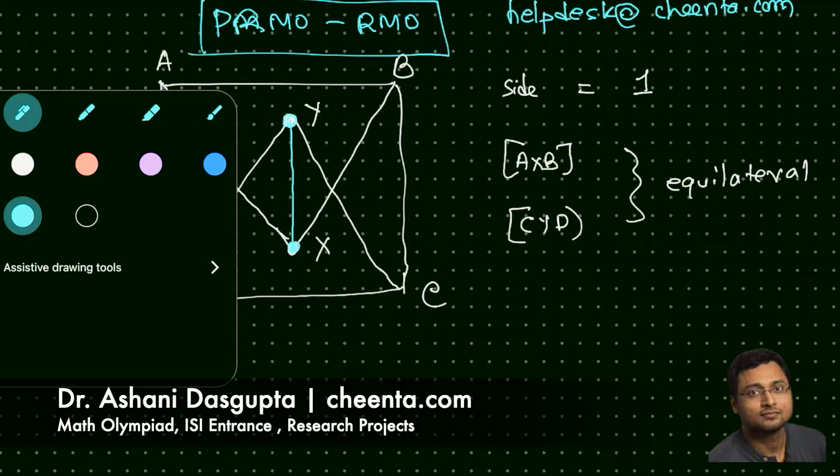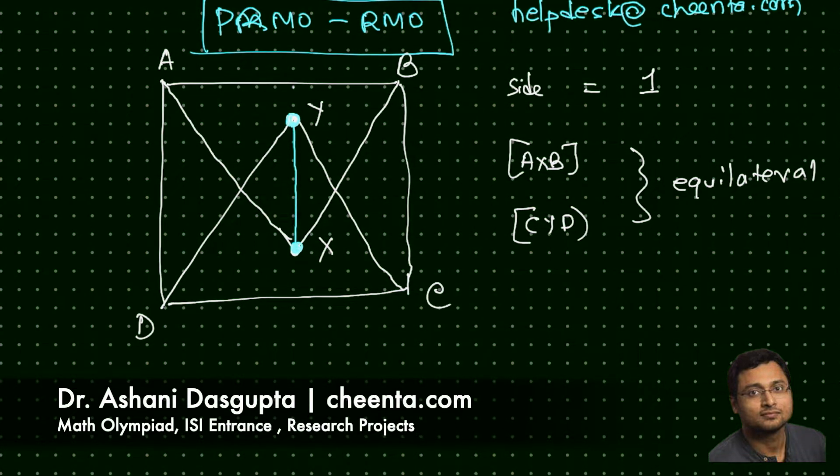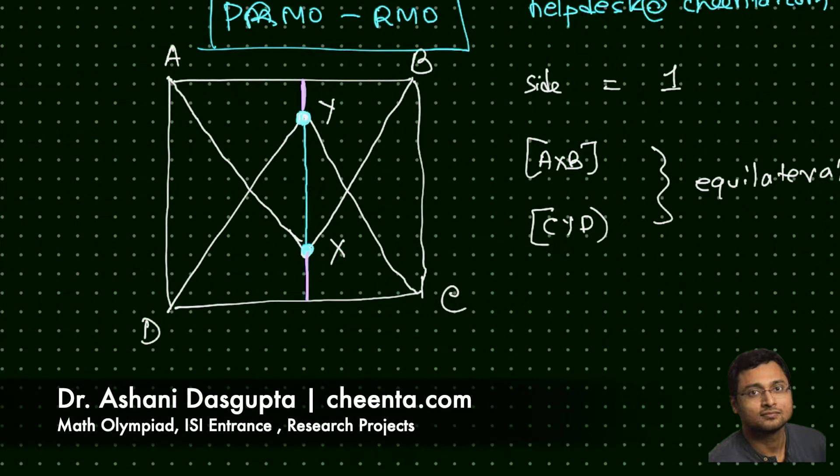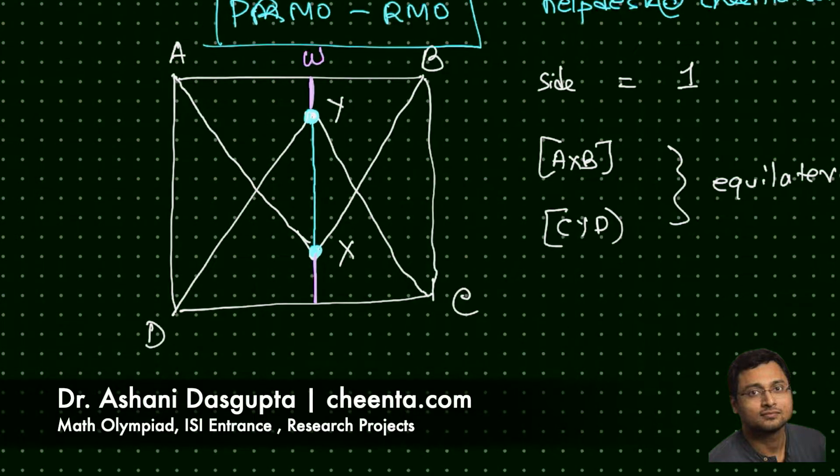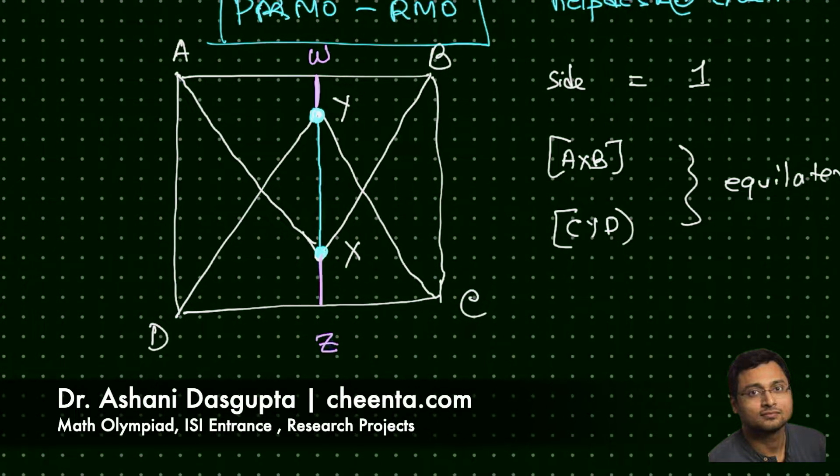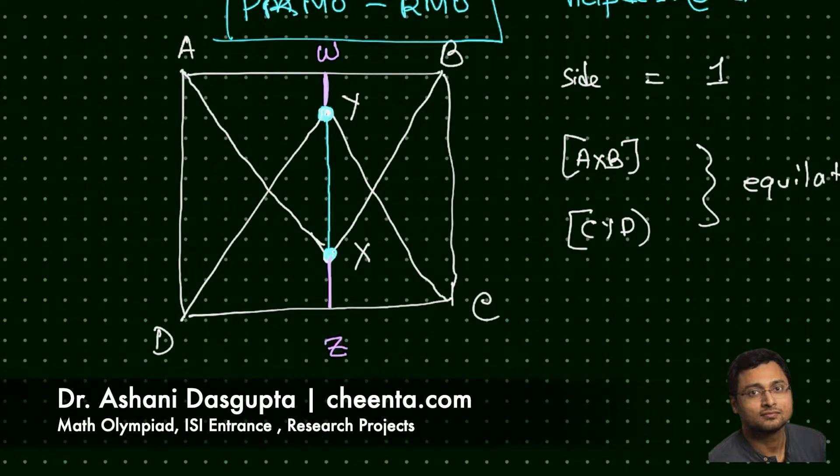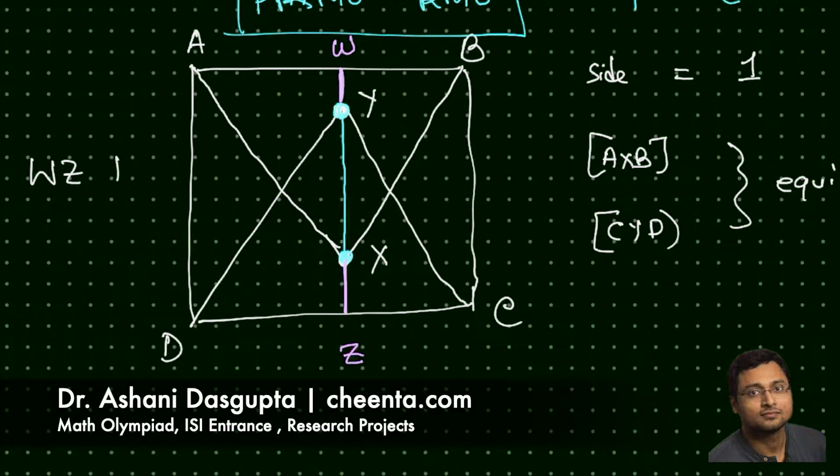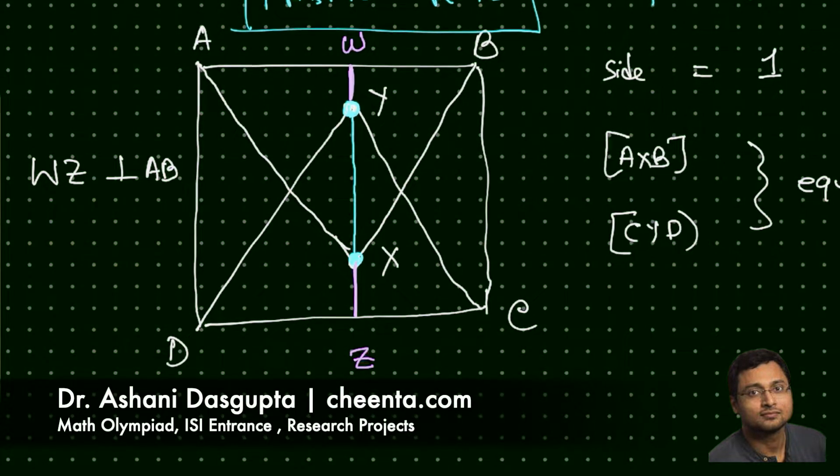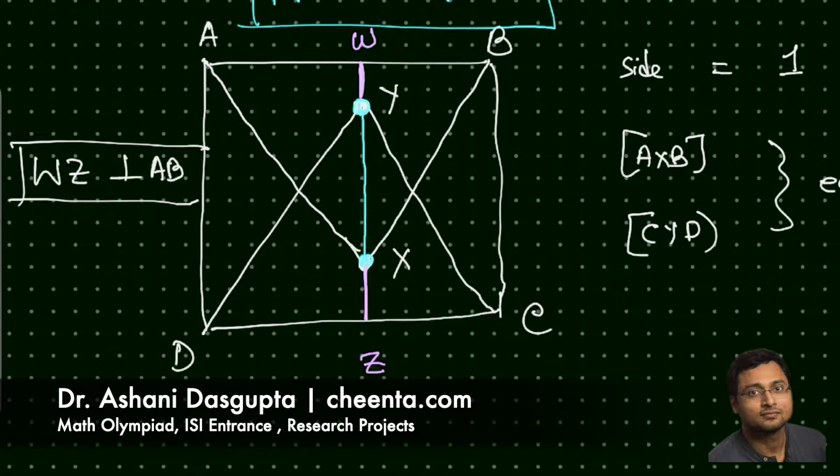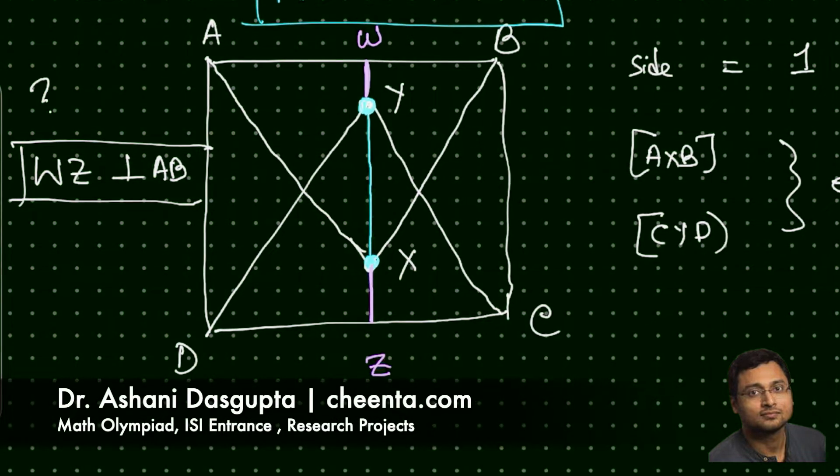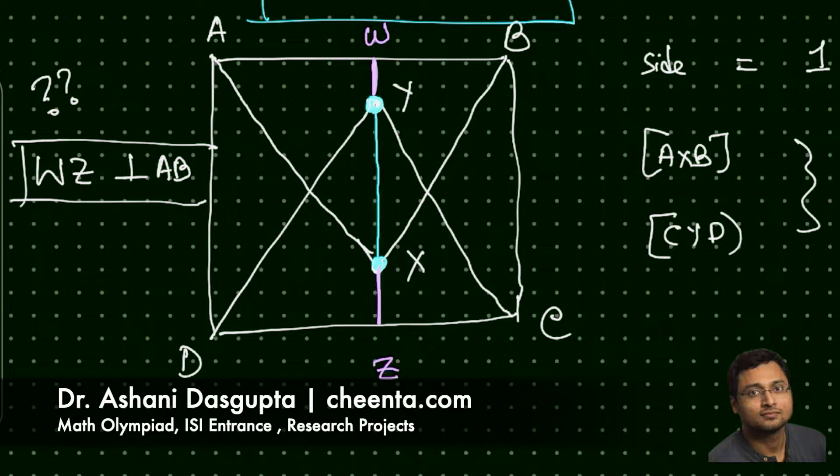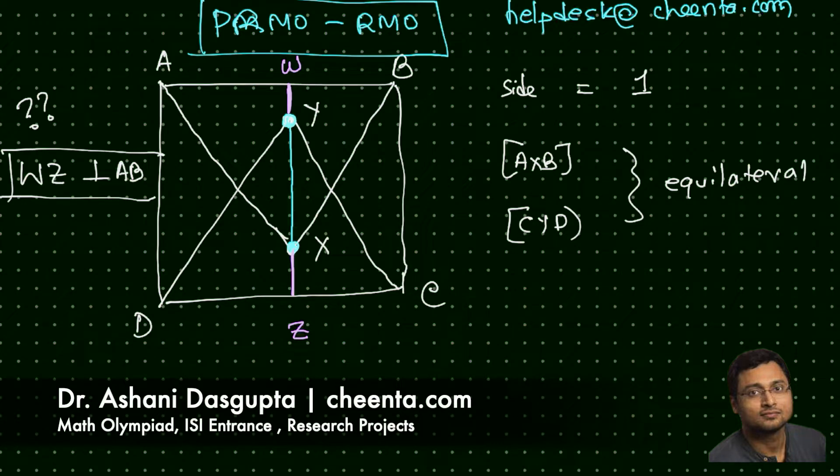Now, how do we solve this problem? Well, let me extend XY in both directions to W and Z. First thing is WZ is perpendicular to AB. How can you rigorously argue this? Send me a written argument in the comment of this video.